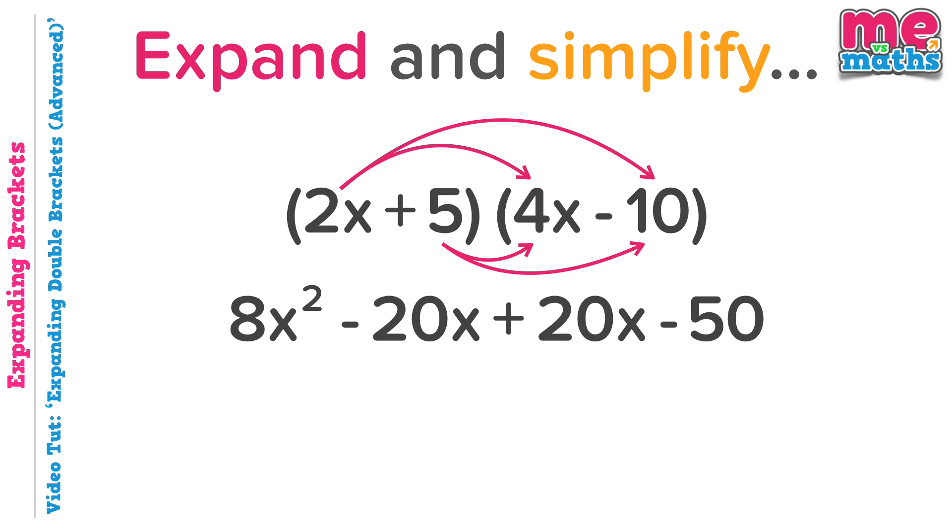We've actually done this example just to see what happens now when we come to simplify our answer. Minus 20x plus 20x. Those two terms will cancel each other out. It simplifies to nothing. So our final answer will retain the 8x squared and the minus 50, but that's it.